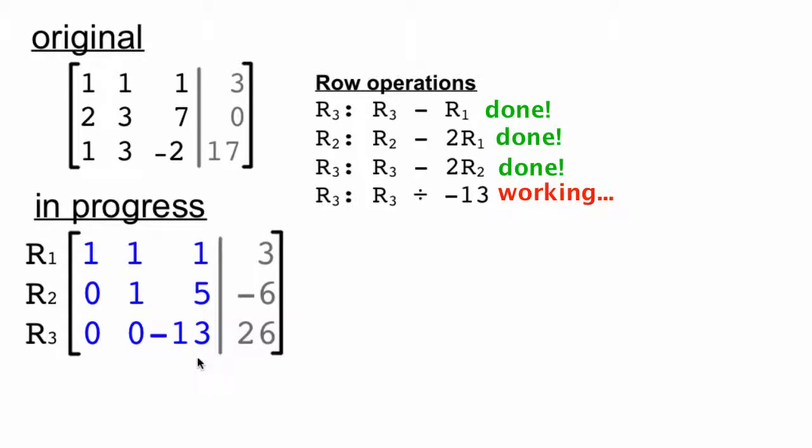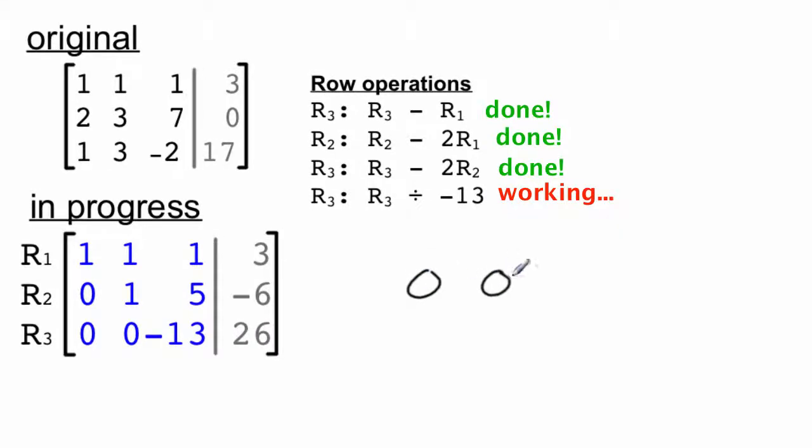Now at this point, we're in a good position for row 3 because if we want this third column, third row element negative 13 to become a 1, all we have to do is divide it by negative 13. And so here's what that looks like. And we'll update the row.